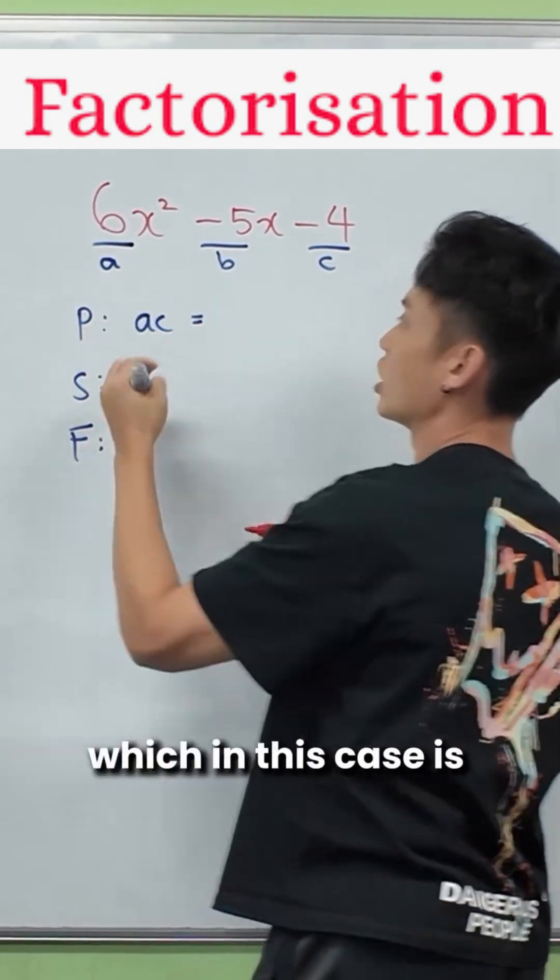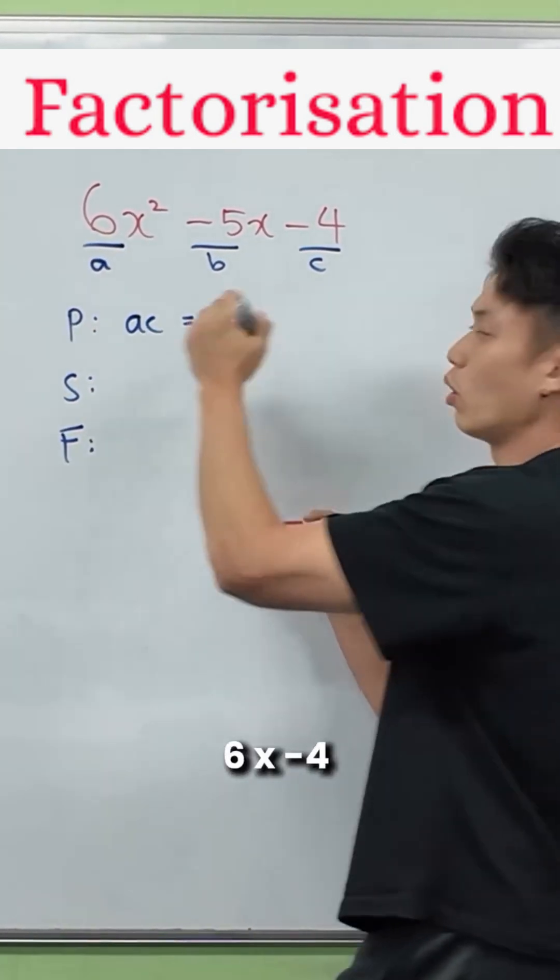To find P, we are going to do A times C, which in this case is 6 times negative 4, which is negative 24.